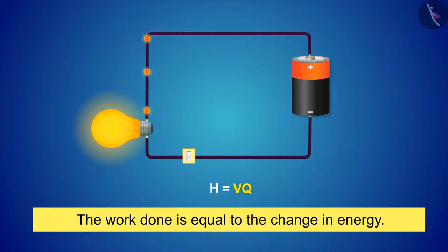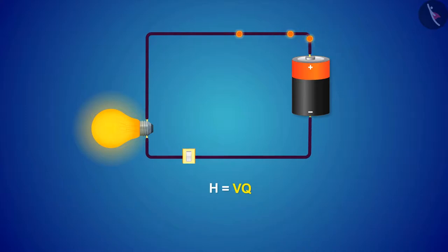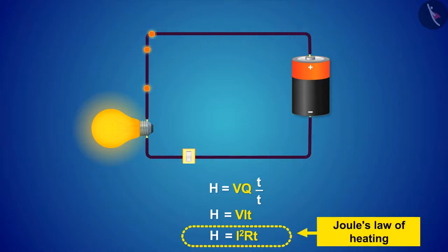If we multiply and divide the right-hand side of the equation by t, we will get this equation. And after applying the formula of voltage from Ohm's law, such an equation will be obtained. This equation is known as Joule's law of heating.